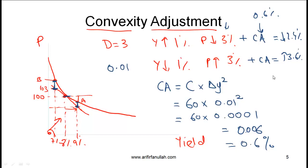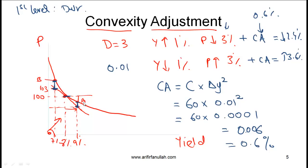Another basic point is that even with the convexity adjustment we are still talking about an approximation. The first-level approximation is to simply use duration; when you add the convexity adjustment your approximation is much better. But if you want precise values then you should use the full valuation method.